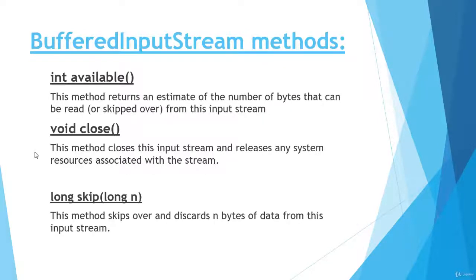These are the methods present in the buffered input stream class. First we have the available method, which returns the estimated number of bytes that can be read from the input stream — it returns an integer value. Next we have the close method, which closes the input stream and releases any system resources associated with the stream. Next we have the skip method, which skips over and discards n bytes of data from the input stream.